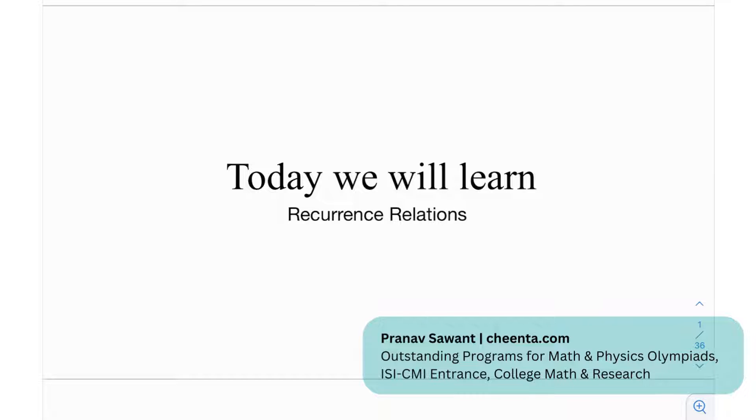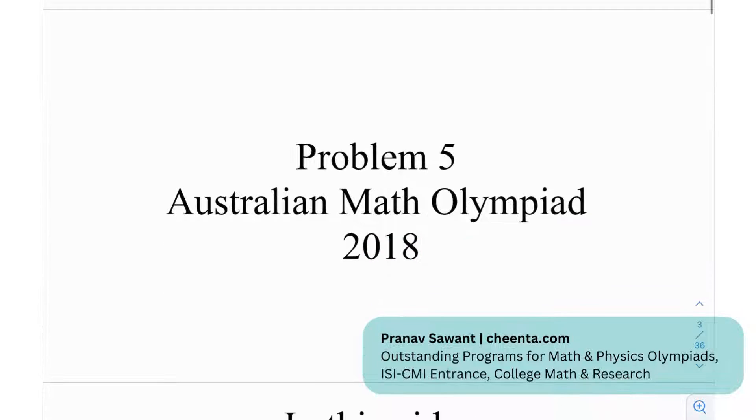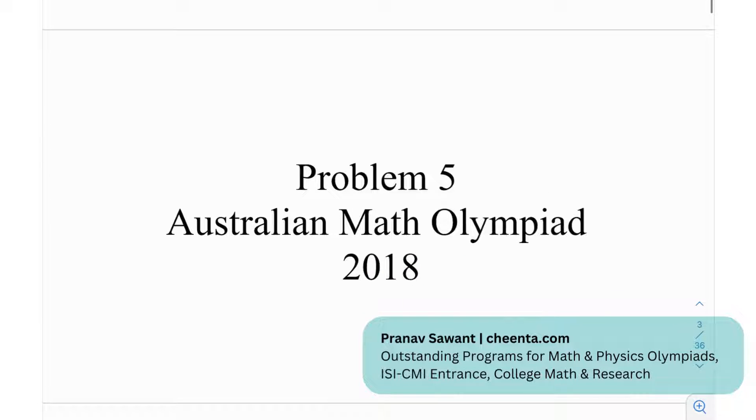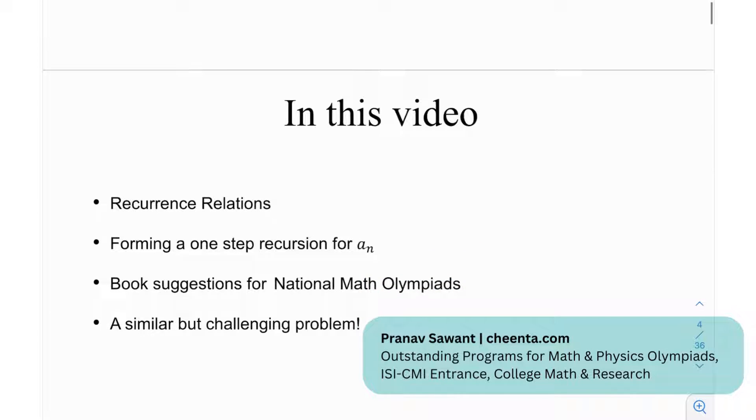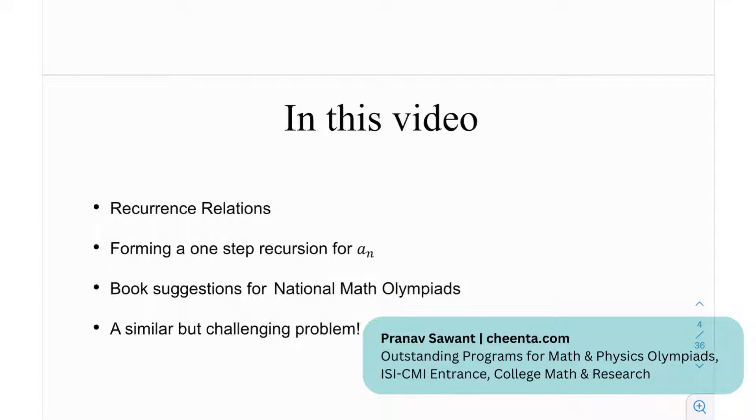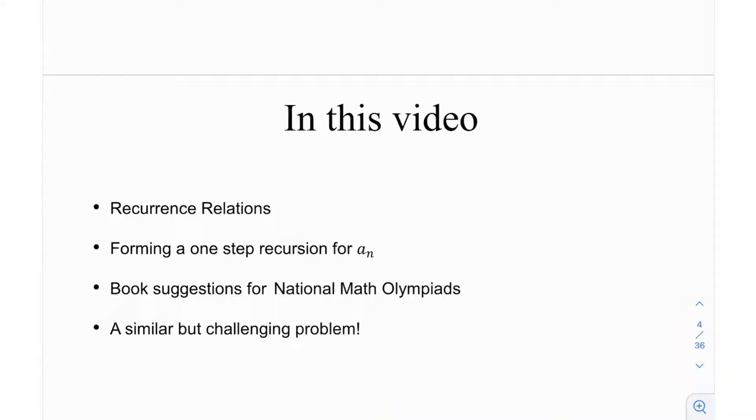This is problem number five from the Australian Math Olympiad in 2018. In this video we're going to be looking at recurrence relations, then forming a one-step recursion for aₙ. After that we have some book suggestions for national math olympiads, and at the end a similar but challenging problem.